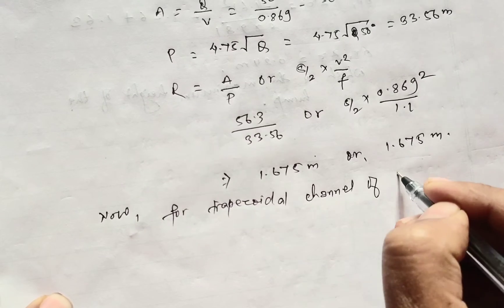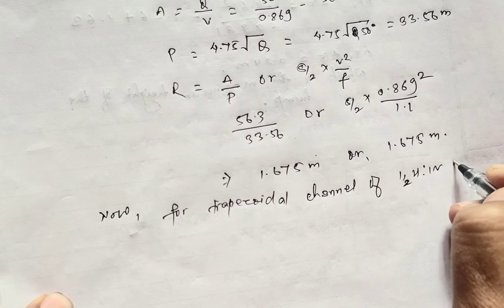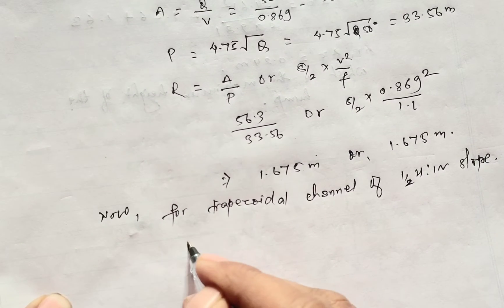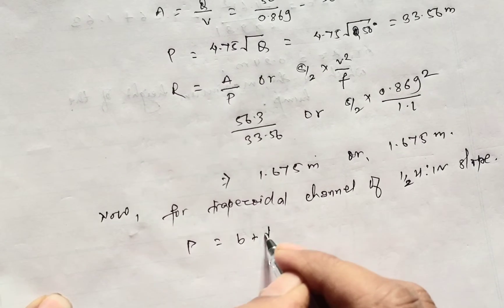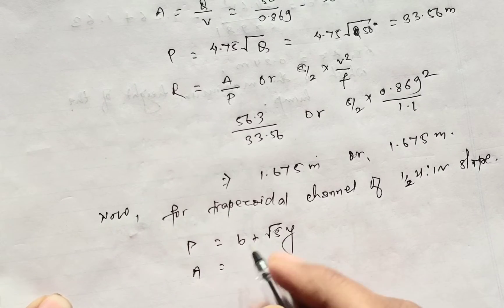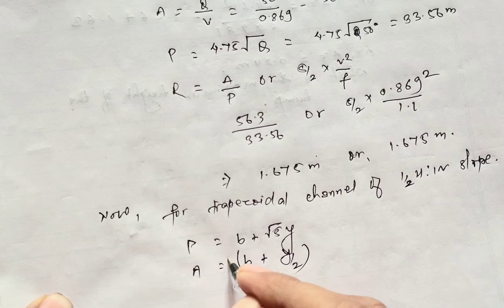The trapezoidal channel has 1 by 2 height to 1 vertical slope. For perimeter of the trapezoidal channel, P equals B plus root over 5Y, and the area A is B plus Y by 2, times Y.